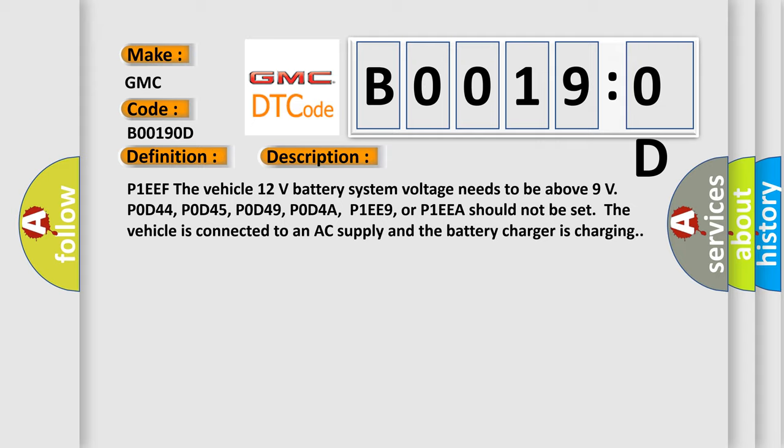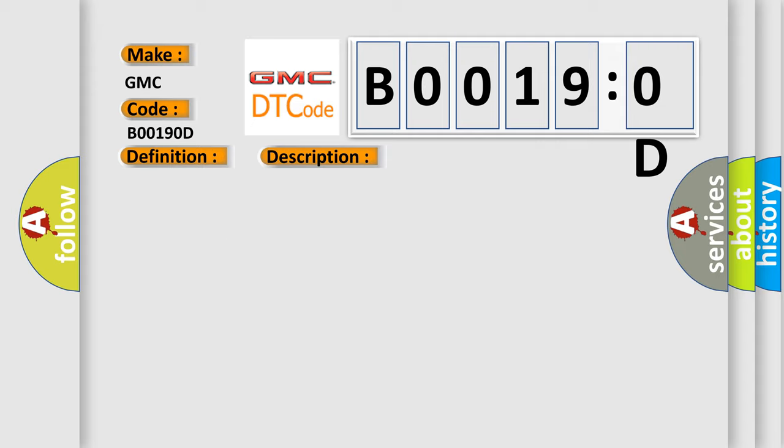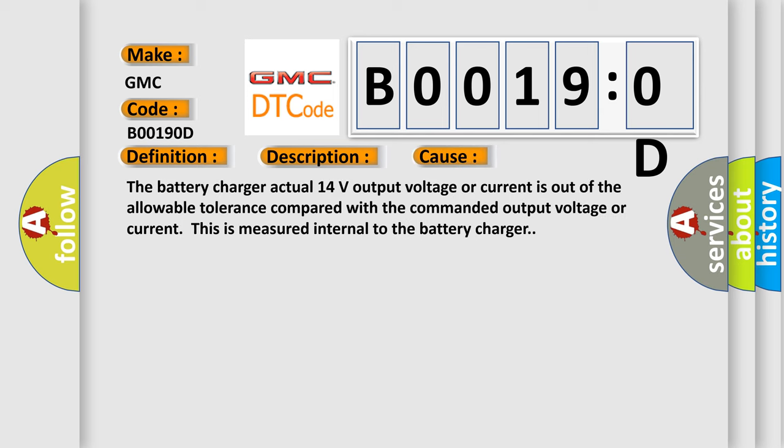This diagnostic error occurs most often in these cases: The battery charger actual 14 volts output voltage or current is out of the allowable tolerance compared with the commanded output voltage or current. This is measured internal to the battery charger.